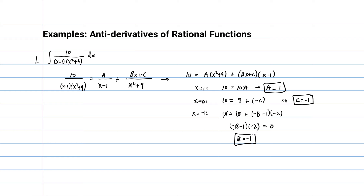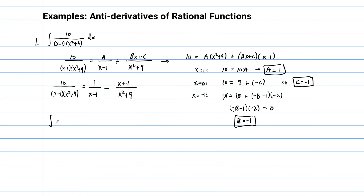After all that, our partial fraction decomposition gives us: 10 over (x minus 1)(x squared plus 9) equals 1 over (x minus 1) minus (x plus 1) over (x squared plus 9). So our integral becomes the integral of 1 over (x minus 1) dx minus the integral of (x plus 1) over (x squared plus 9) dx.